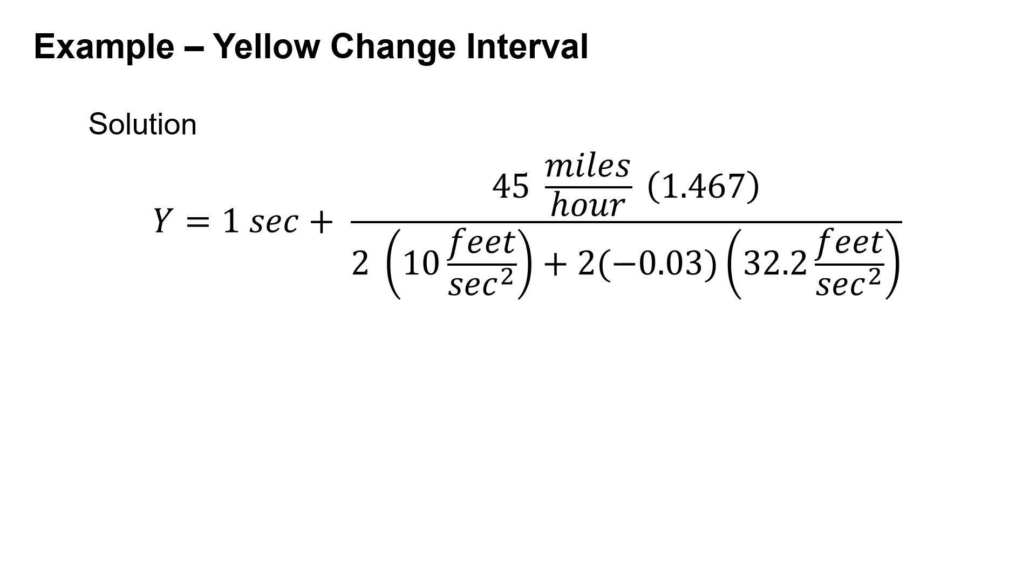Plugging in our values for the equation: Y equals one second plus, on the numerator, 45 miles per hour times our conversion factor to convert that to feet per second—that's 1.467 times 45 miles per hour.